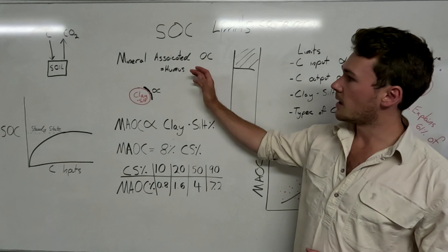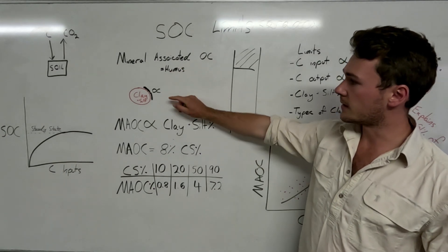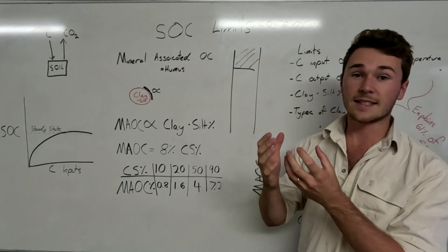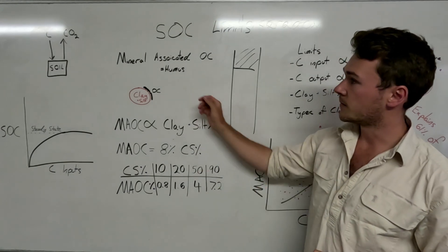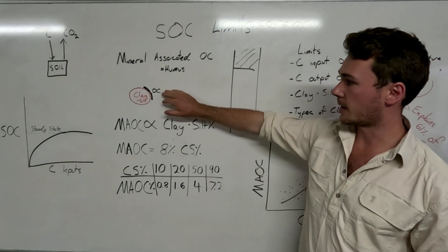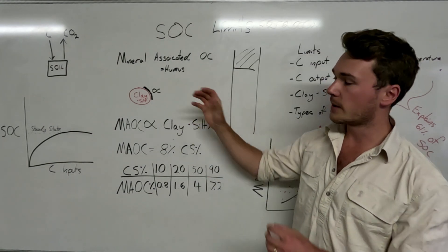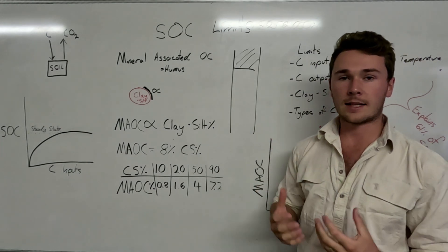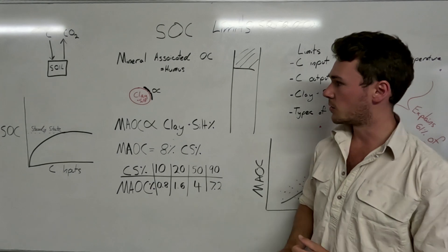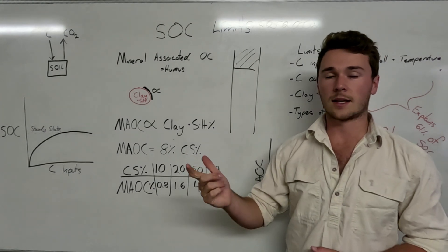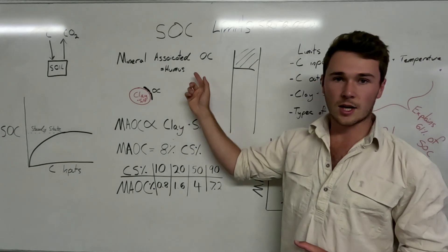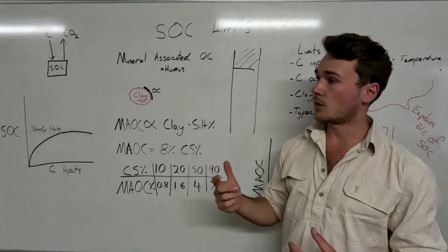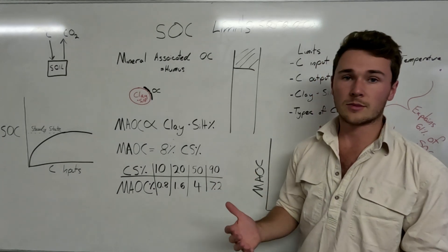The current understanding is that mineral associated soil organic carbon is organic carbon that's actually stuck to the mineral — the clay and silt particles in our soil. It's assumed to be stable because it's bound to a mineral component, meaning it's unavailable for microbes to consume. So there are two components of soil organic carbon: the mineral associated component, and the available or labile component which is available for microbes to actually eat.